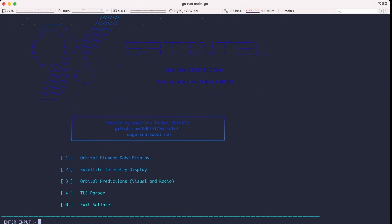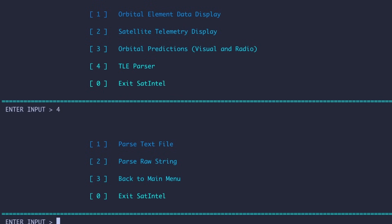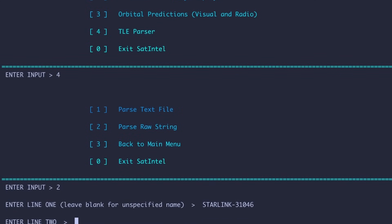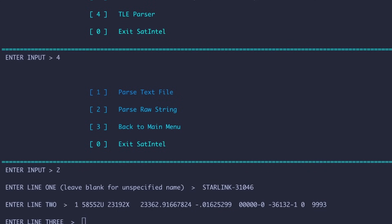Lastly, you can use this tool to parse TLEs. To do this, type in 4. And we can do this from a raw string. So let's say I wanted to parse the Starlink satellite from N2YO. I would do this by pasting in the TLE catalog. For the name, you just put in the name. So I'll just put in Starlink 31046. For the first line, I could type in the line provided in the TLE of N2YO. And then the third line would be the last line of the TLE. And there you have it.